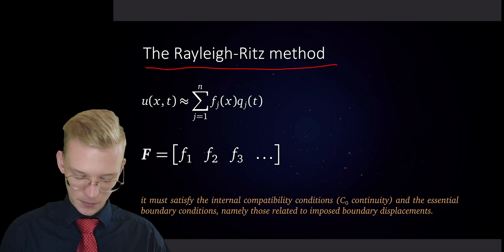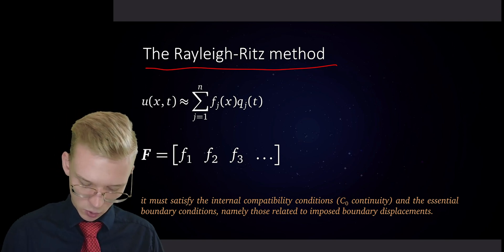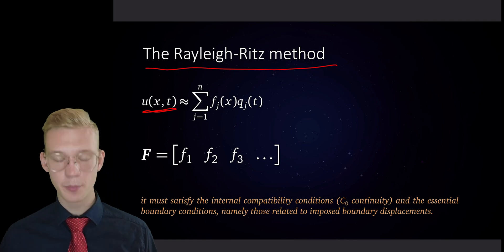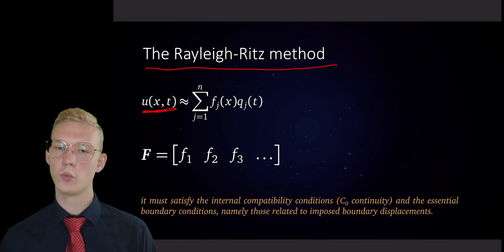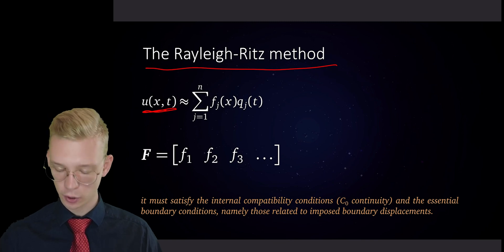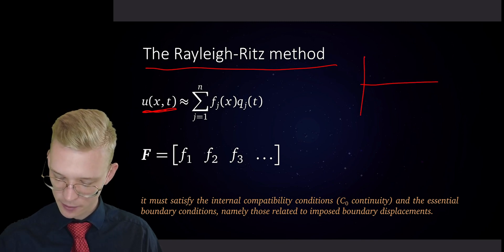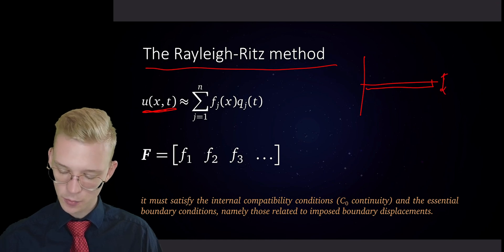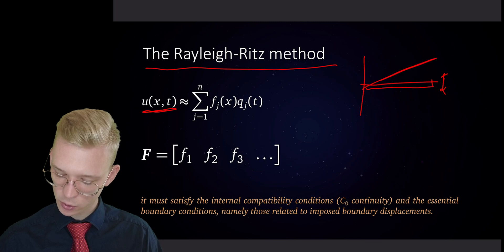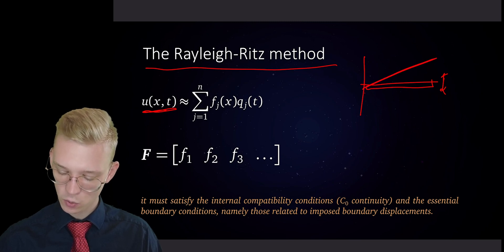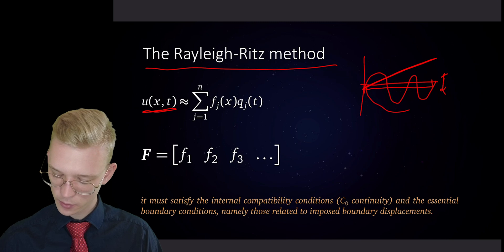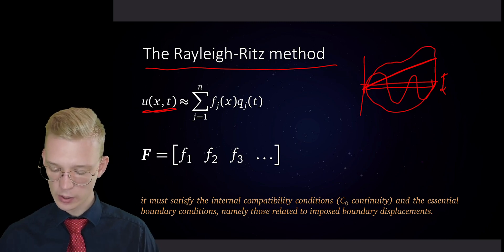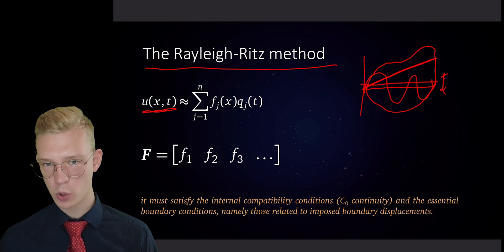The Rayleigh-Ritz method is basically an approximation. We have a function in time and space and we propose a solution already — we propose functions on how the system could look like. For example, we have a beam and we say that beam is vibrating up and down. We propose a function that looks like it could vibrate like this, or like this one, or something like that, or something like this one. So these are all functions that we could propose.